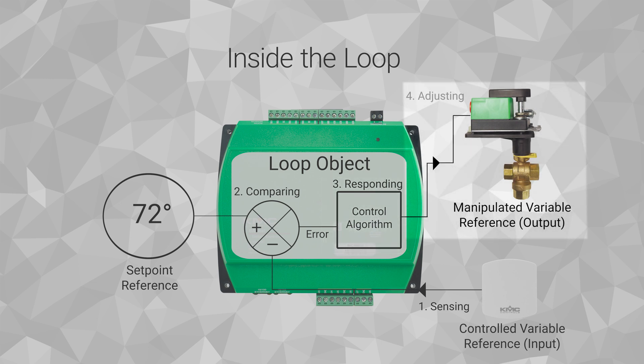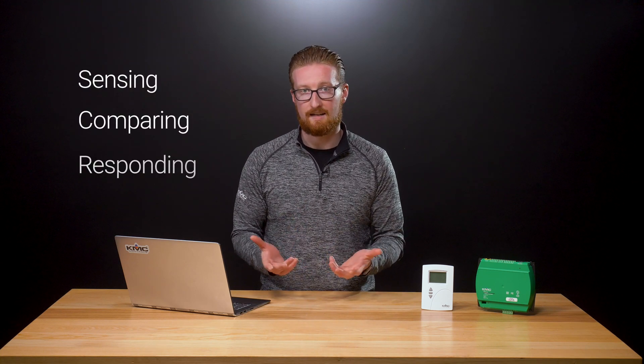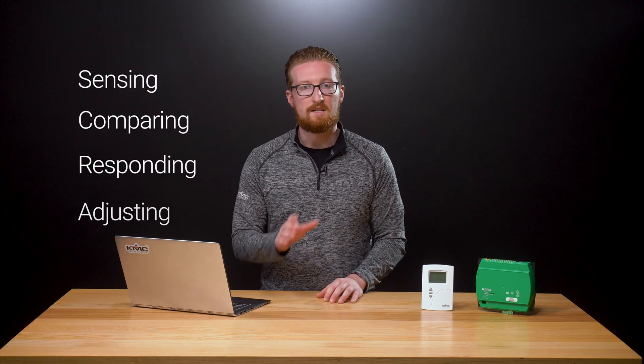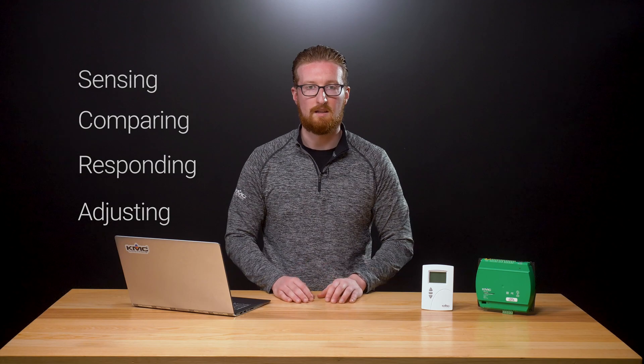Finally, the loop adjusts by using the corrective control signal to command a device such as a valve, heater, or damper to produce a change in the current condition. The four steps of sensing, comparing, responding, and adjusting continuously operate within the PID loop.